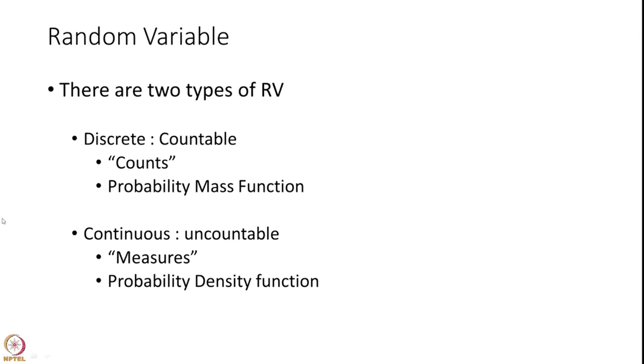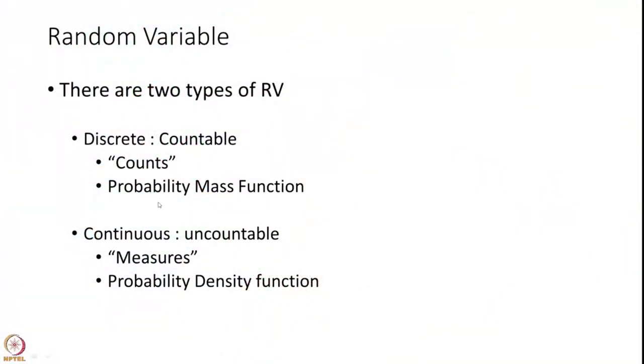There are two types of random variables. One is countable — discrete — and the other is uncountable or continuous. For example, counting the number of defective outcomes from a processing unit gives countable values like 2, 3, or 5 defectives. This is called a discrete random variable, and it has a quantity called the probability mass function attached to it. A continuous random variable, like yield strength, measures a certain quantity and therefore has a probability density function attached to it.